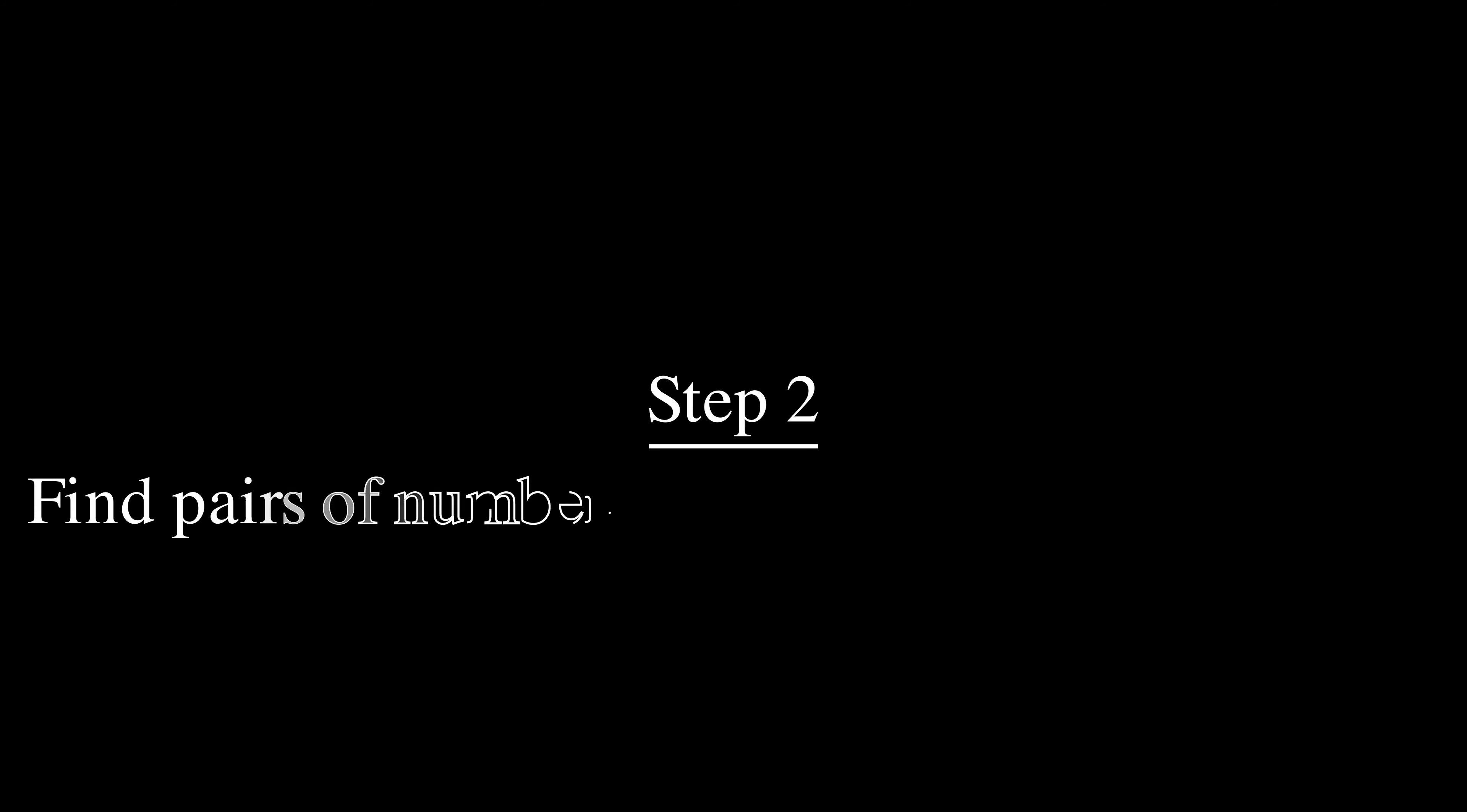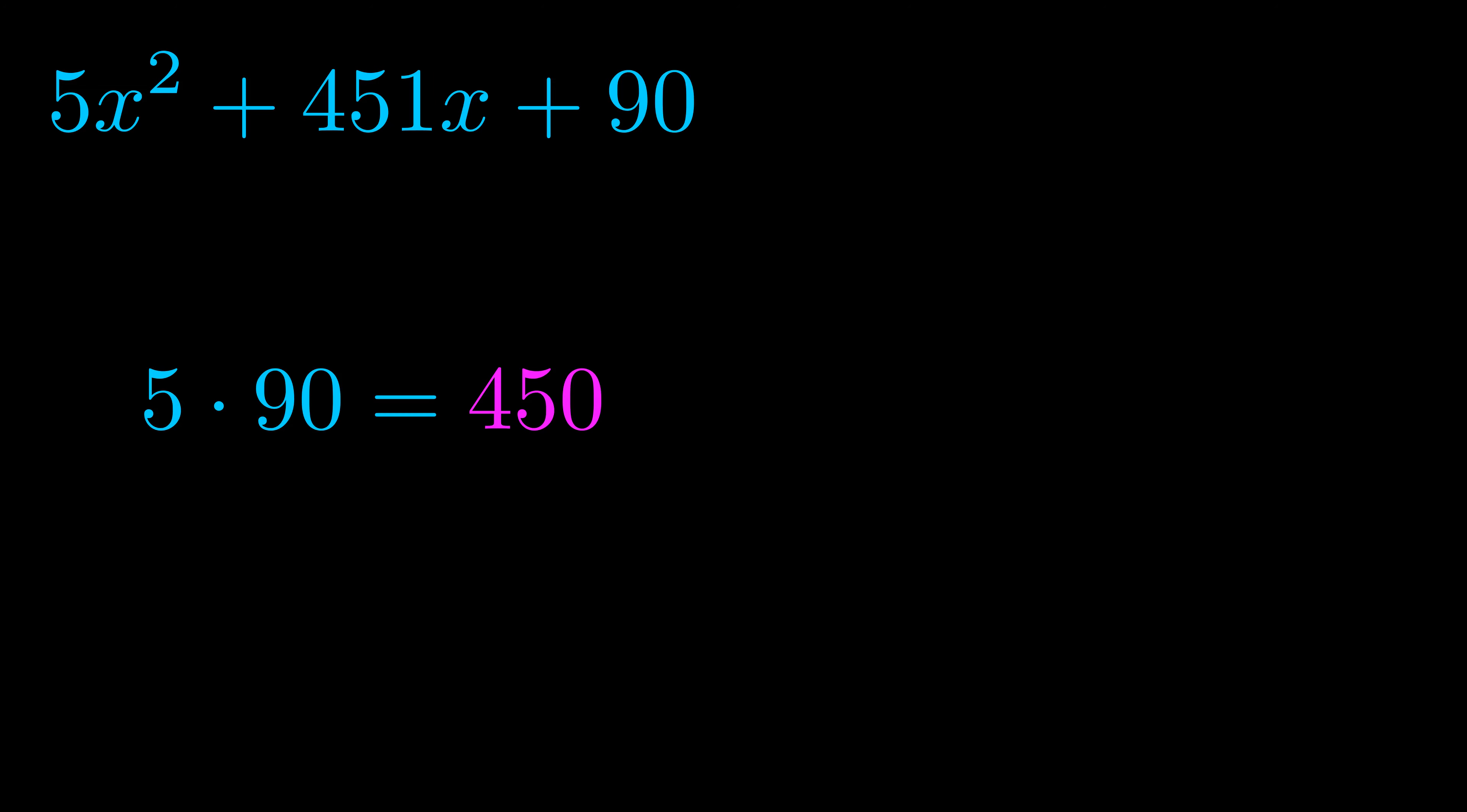Step two is to try to find all of the pairs which multiply to this number. Now turns out you don't really need to find all of them but go ahead and write down as many numbers as you can that multiply to the magenta value for now.